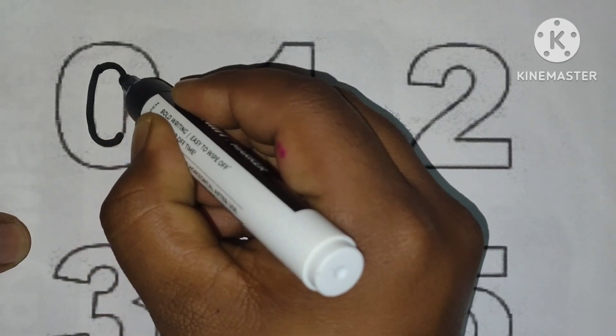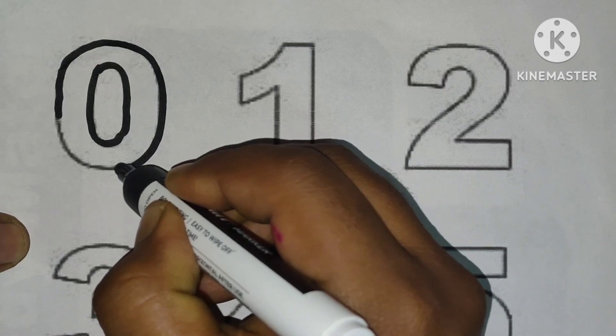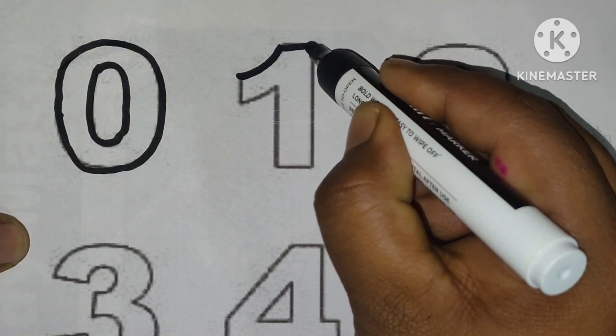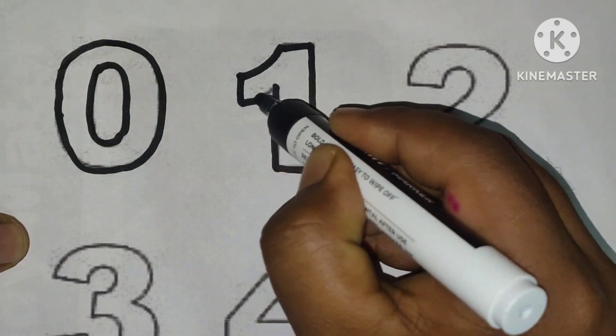Let's learn the English number. Zero. Zero. One. One. One.